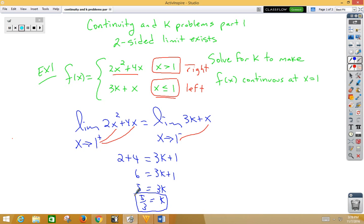That would mean if we plug in 5 thirds into k into the original problem, then indeed the left and the right-sided limits would be the same.